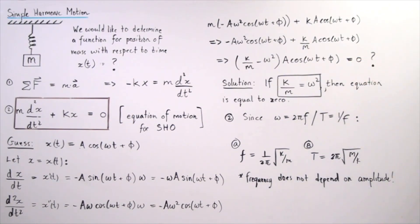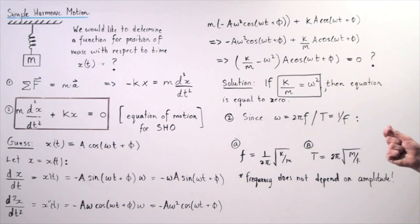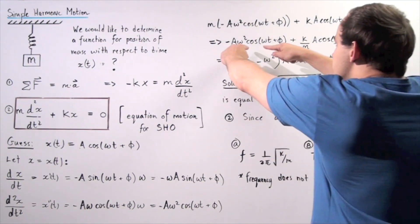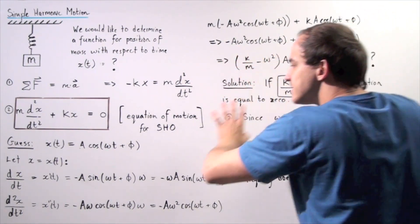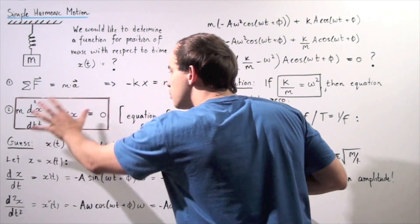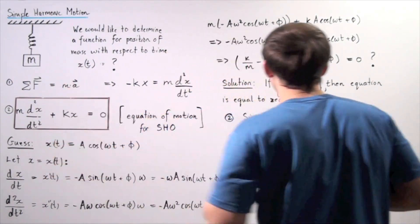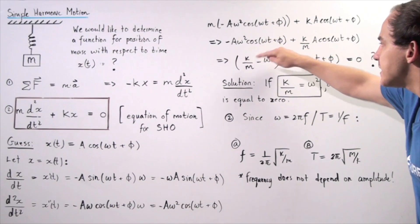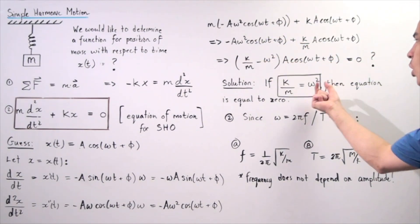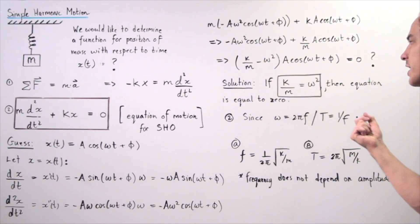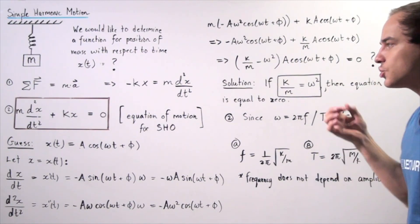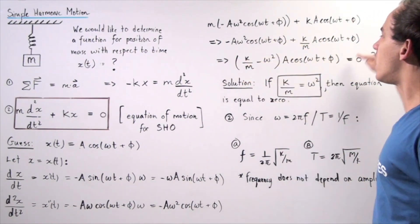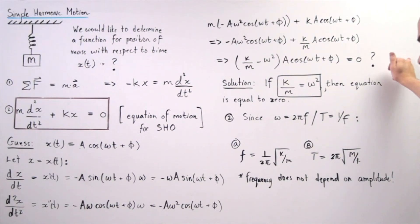This expression equals zero only when k/m − ω² equals zero. Therefore, our proposed solution is indeed a solution to the differential equation if and only if k/m equals ω².